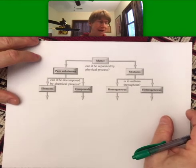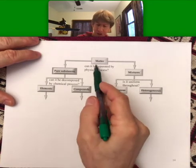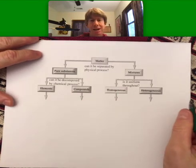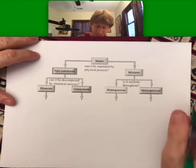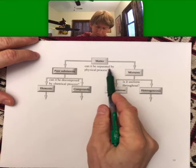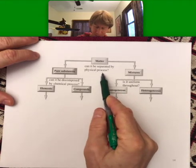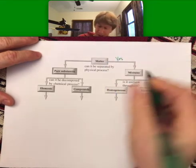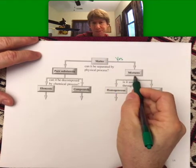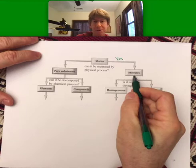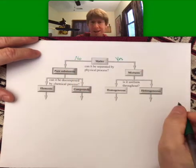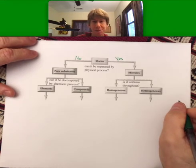We get to matter. Remember, we started off by talking about matter. Matter is anything that has mass and takes up space. Can it be separated by physical process? If the answer is yes, then it's a mixture because it has more than one type of substance. If the answer is no, then it's going to be a pure substance.